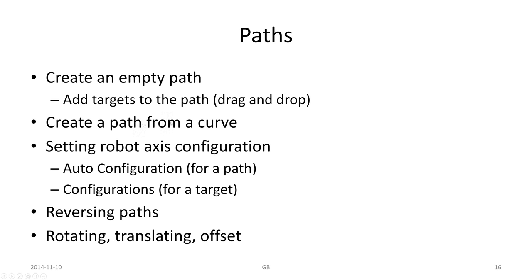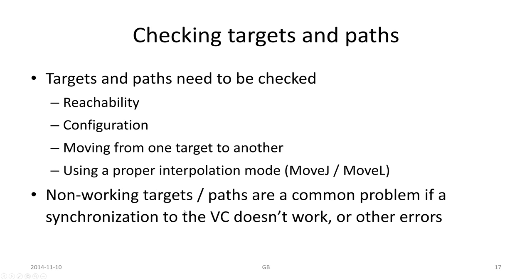We can create a path from a curve. We can set the robot axis configuration, and we can do reversing, rotating, translating, using offset and so forth. Then we can check if the robot can reach targets, if it can go through the path using a certain configuration. We can move from one target to another, show the robot at different targets or just a tool to see how the orientation looks, and check the interpolation mode — for example, move joint or move linear.